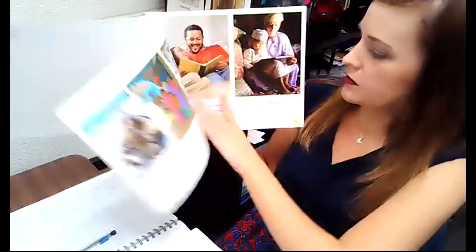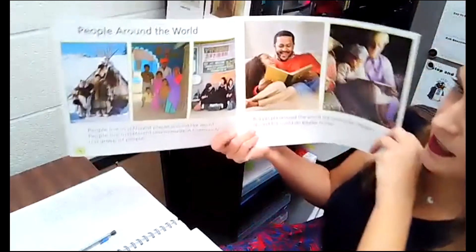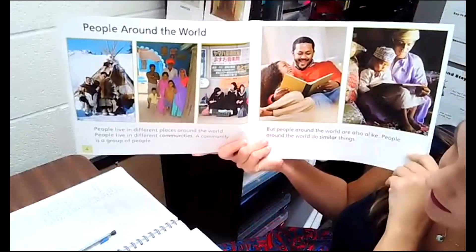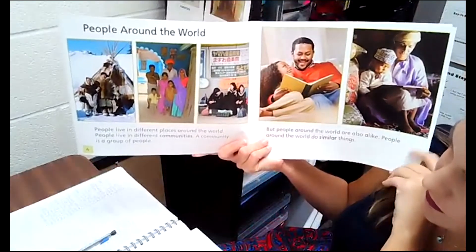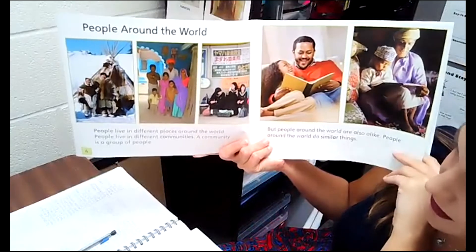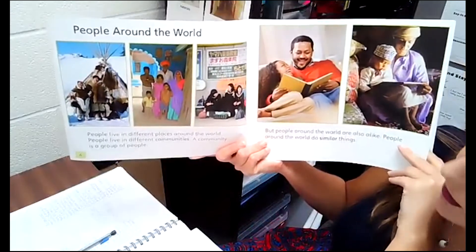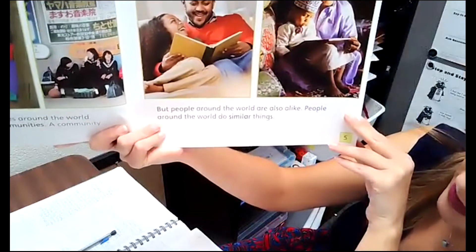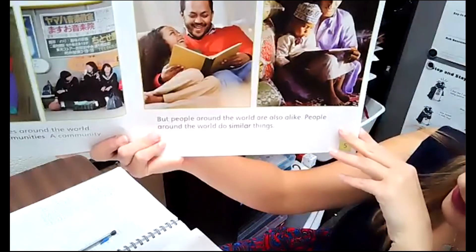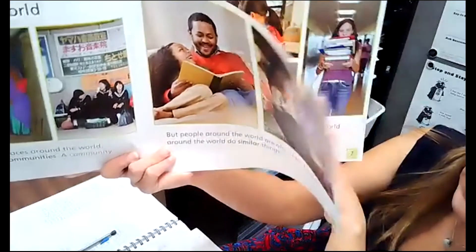People around the world live in different places. People live in different communities. A community is a group of people. But people around the world are also alike — people around the world do similar things.